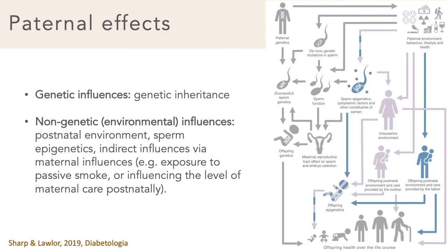The figure on the right is from that review. The most obvious genetic effect is through genetic inheritance of genetic predispositions to disease, but also through genetic mutations in sperm cells. The non-genetic makeup of sperm cells — so things like epigenetics — might also influence development of the fetus. And of course, fathers can also influence the environment that their children develop in after birth.